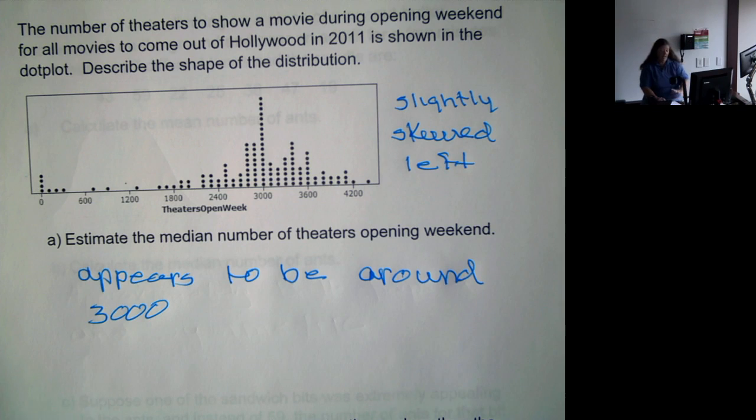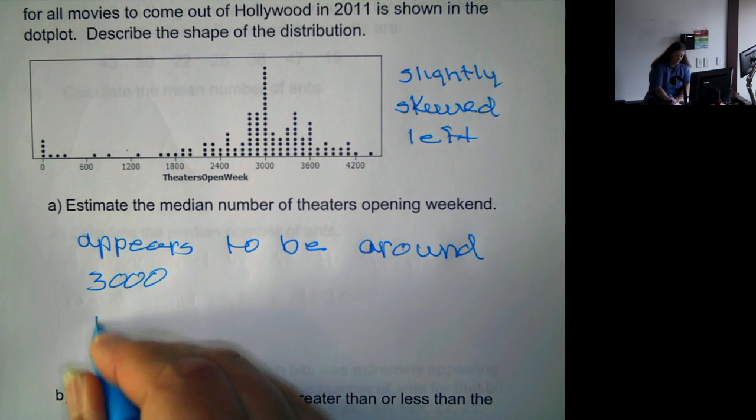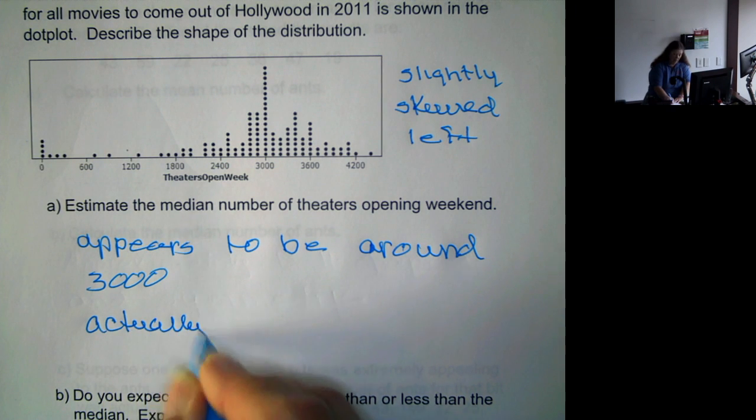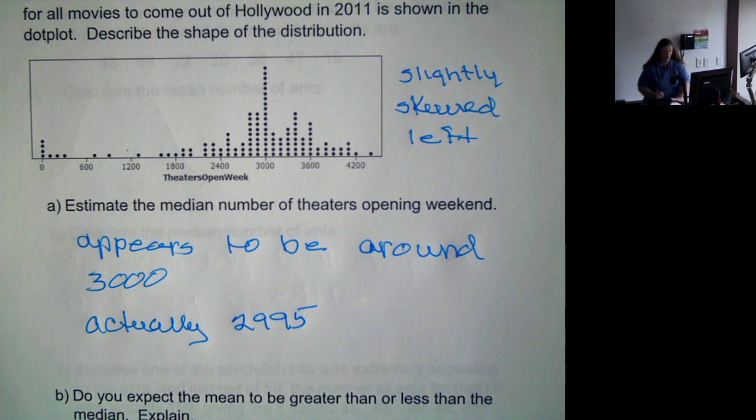If we had the exact values and we found the median of all those values, it actually is at 2,995. So that approximately 3,000 is a good estimate based on the dot plot for what we have.